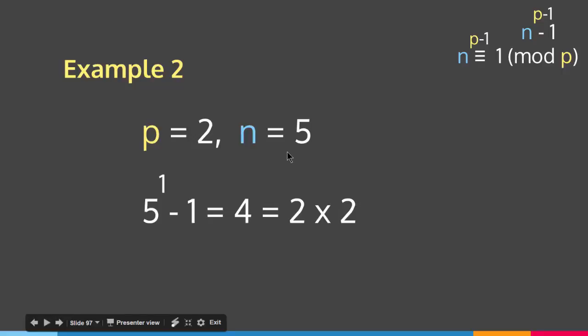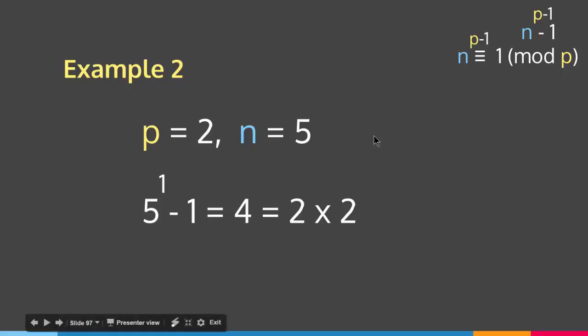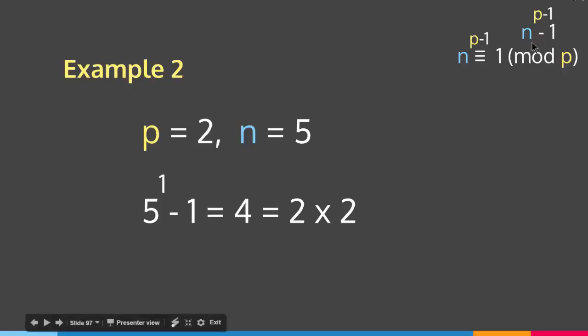So to summarize, this is Fermat's Little Theorem. If you have a natural number n and a prime number p: if p divides n, then n to the p minus n will be a multiple of p. If p does not divide n, then n to the p minus 1 minus 1 will be a multiple of p. And with this we come to the end of this lecture.